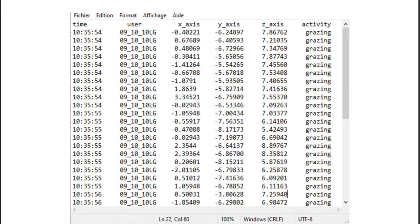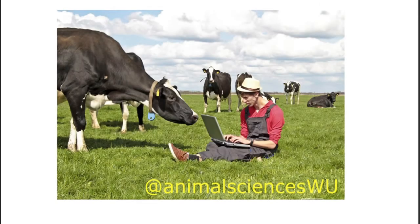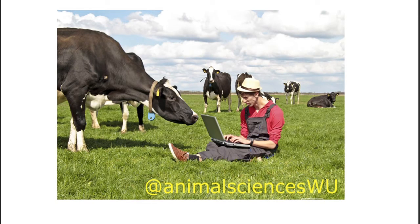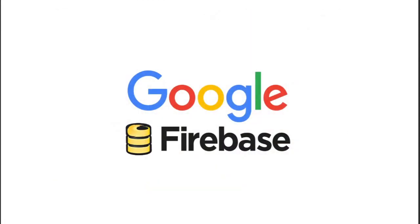For model training, a text file with the three axis accelerometer values and its corresponding activity is necessary. Traditionally, video analysis or direct observation and register are used to establish which activity corresponds with the accelerometer values. In our work, we used direct observation and a cloud database to store the activity changes.